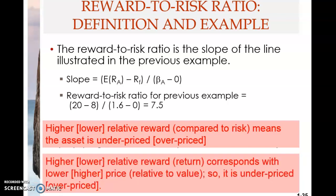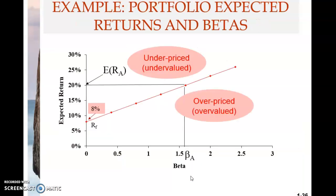Another thing to note: higher the relative reward or return corresponds with lower price — so the asset is underpriced. Lower the relative reward corresponds with higher price — so the asset is overpriced, meaning higher price relative to value. There is such a thing as price and value, and these two should be the same at equilibrium. When there is no equilibrium, the price will differ from the value.